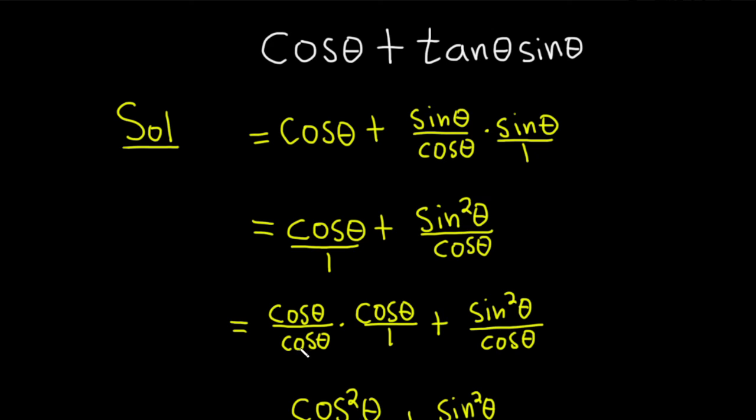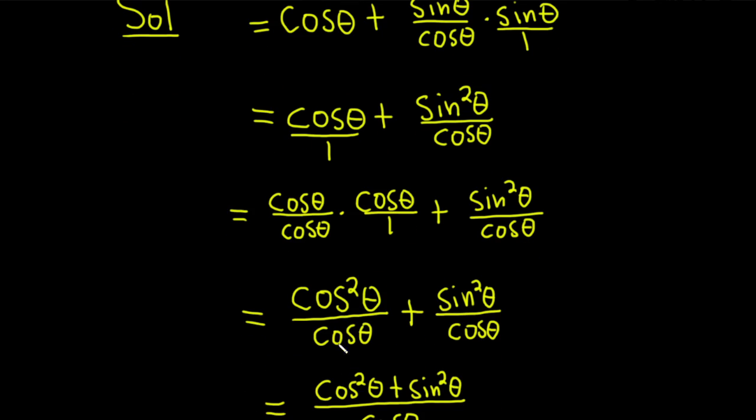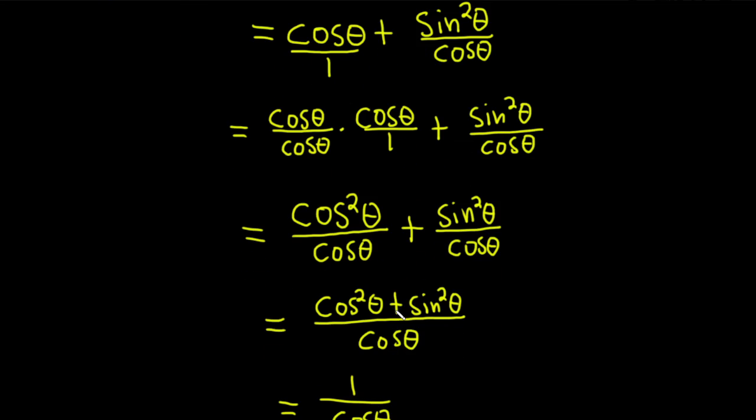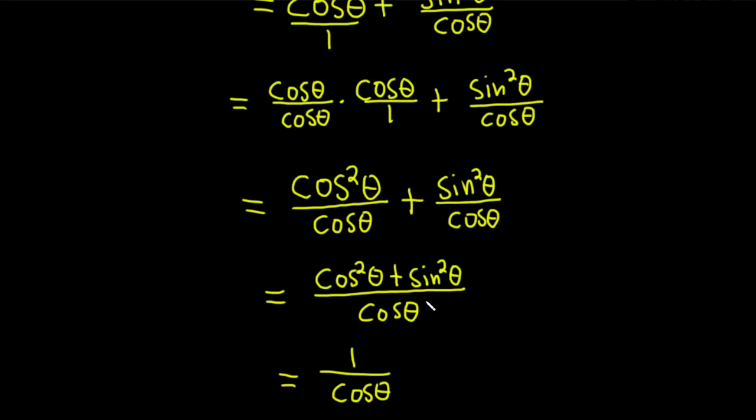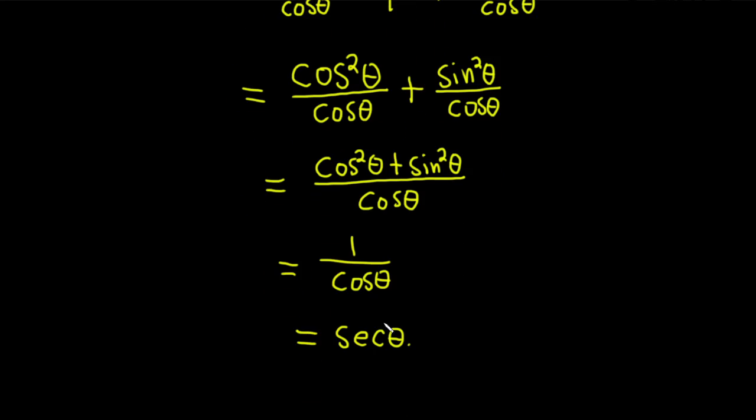It's cosine over cosine. And then you end up with cosine squared over cosine plus sine squared over cosine. So then you have a common denominator, so you can add these fractions. And then cosine squared plus sine squared is one, so you get one over cosine, and that's the same as secant.